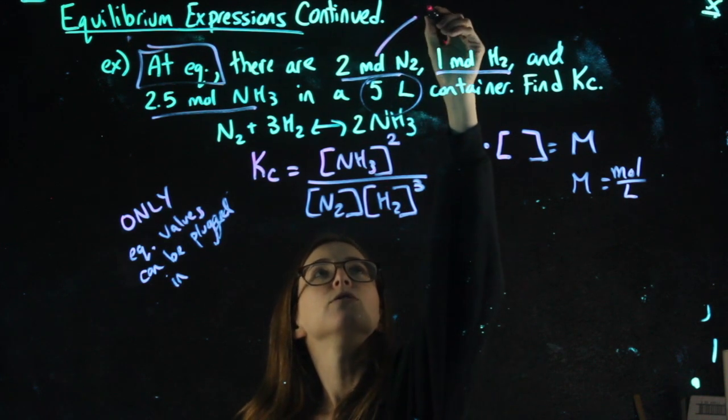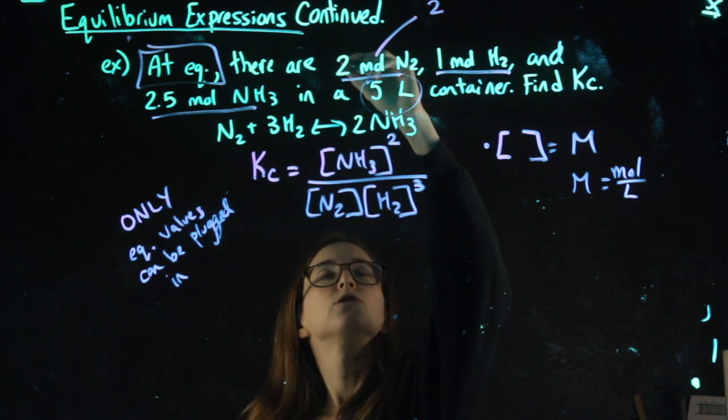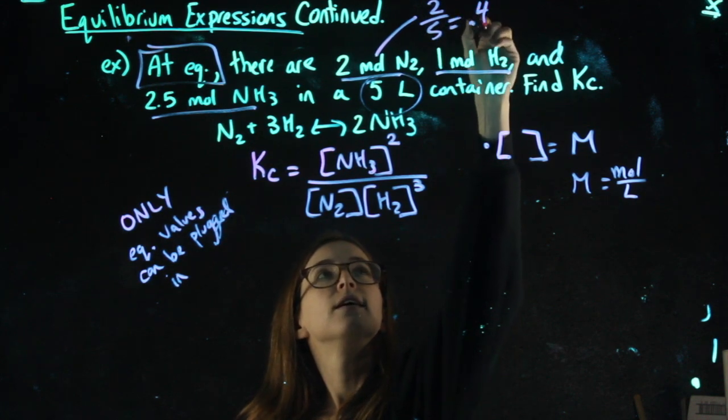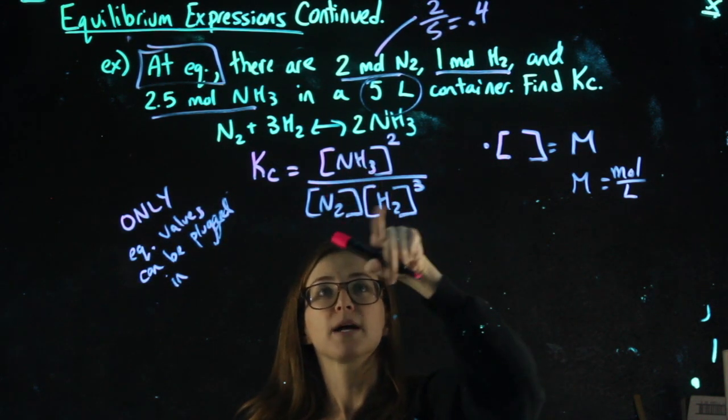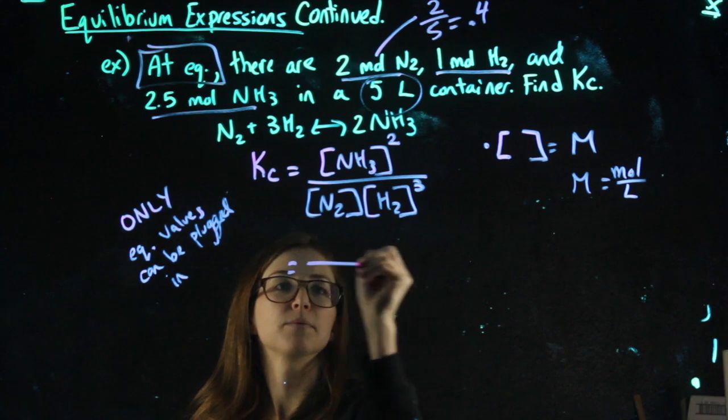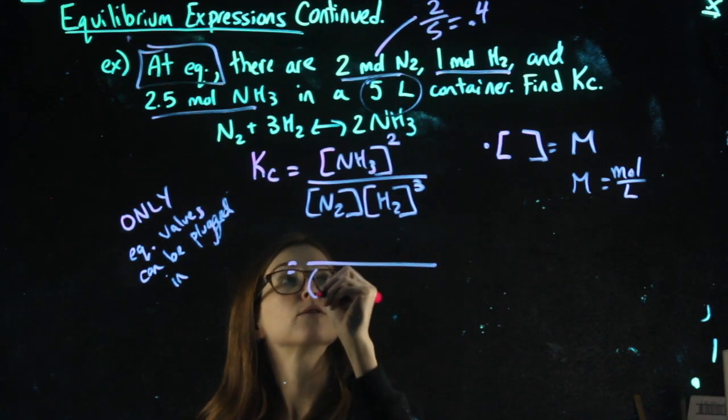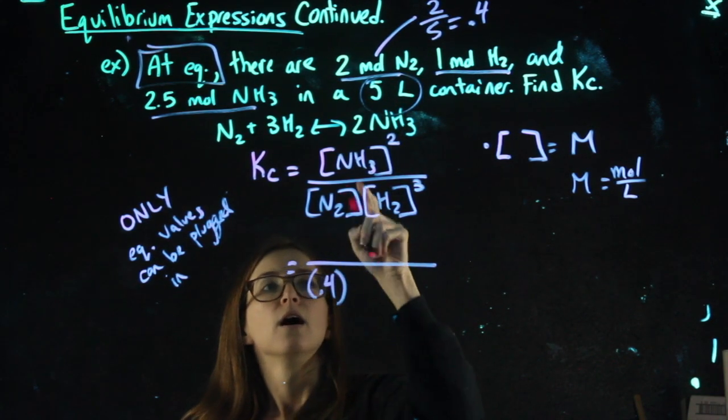So for N2, moles, two moles, divided by the five liters is 0.4. Make sure you plug it in the right spot. That's another place people also mess up. So N2 goes down here. No exponent.